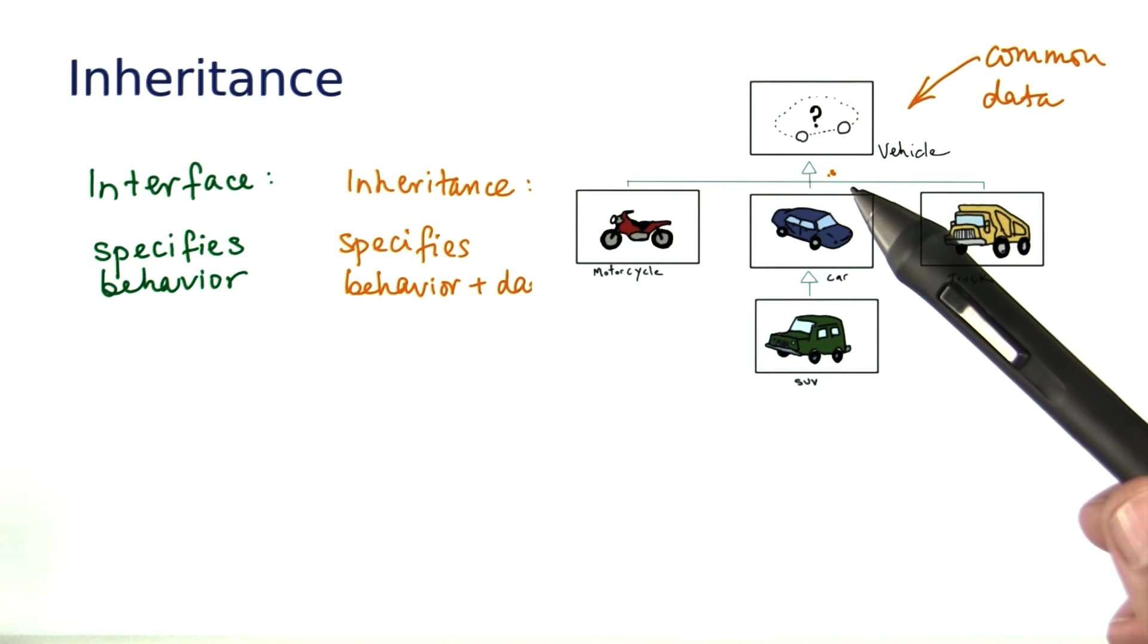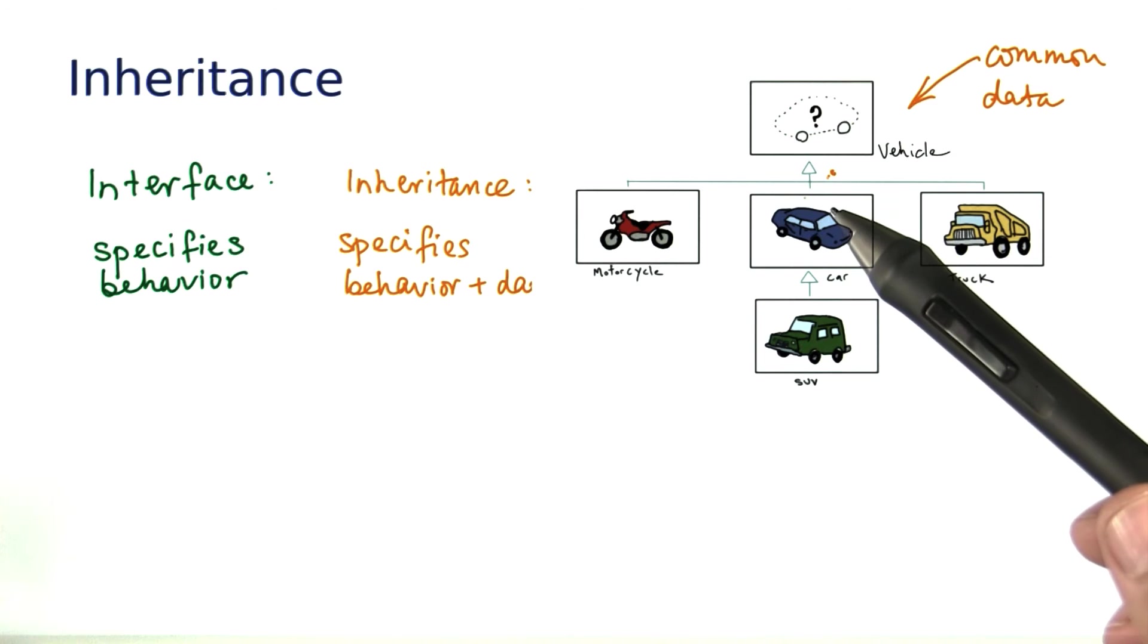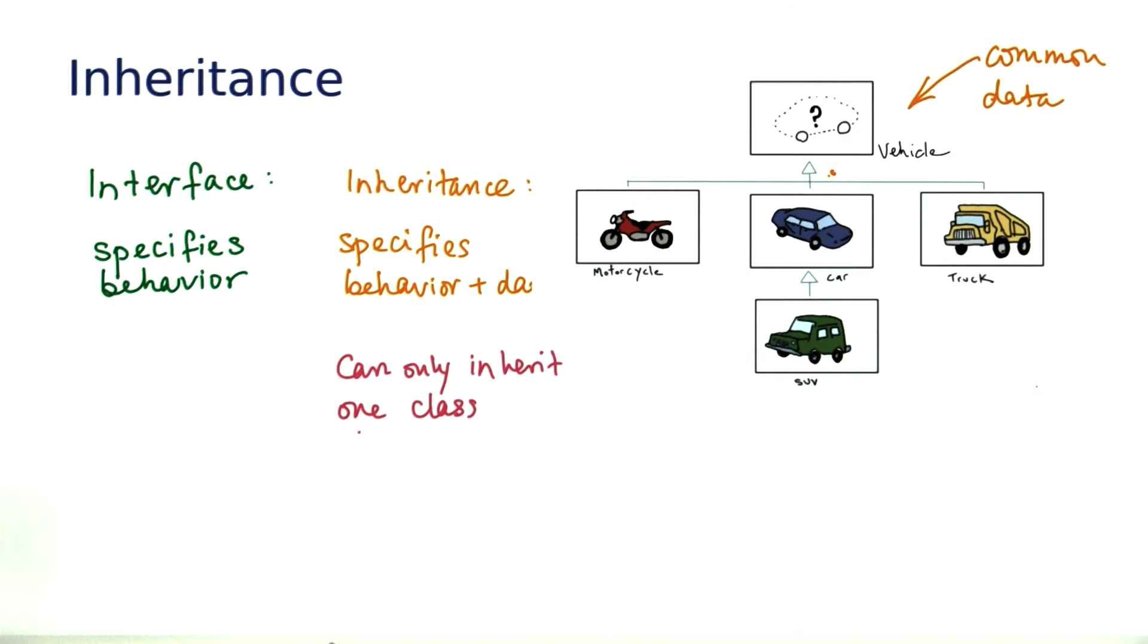Now you might say, why not always use inheritance? It seems better. But there are two issues with it. One is it is complex. And also, a class can only inherit from one class, whereas a class can implement as many interfaces as it likes.